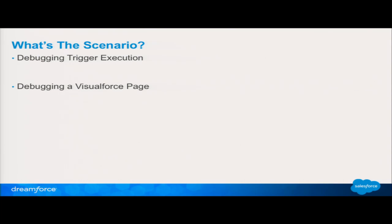For triggers I'm going to do some JSON serialization because that's particularly painful — I've been working on something around that so I know. And we're going to be debugging an action method inside of a Visualforce page. Hopefully this will hit close to the mark; most of you guys have done something similar and you'll be able to relate to these scenarios.